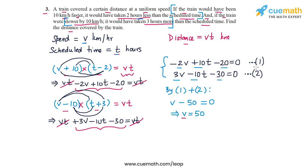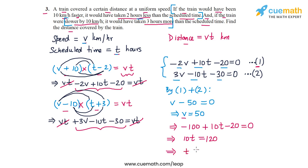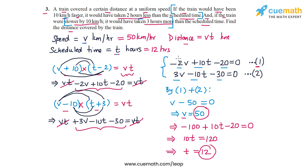Substituting v equals 50 into equation 1: minus 2 times 50 plus 10t minus 20 equals 0, which gives minus 100 plus 10t minus 20 equals 0, so 10t equals 120, meaning t equals 12. The normal speed of the train is 50 kilometers per hour, the scheduled time is 12 hours, and therefore the distance covered is 50 times 12, which equals 600 kilometers.